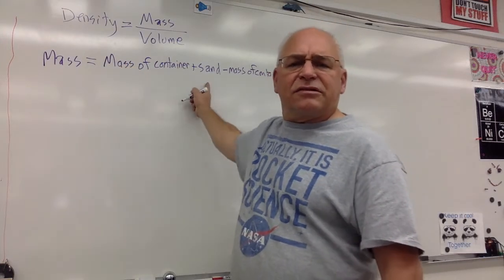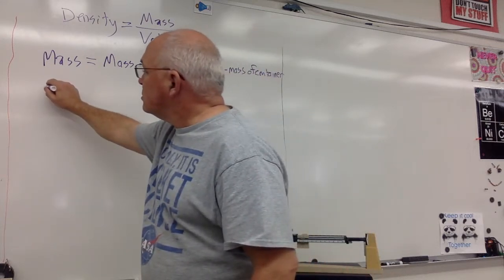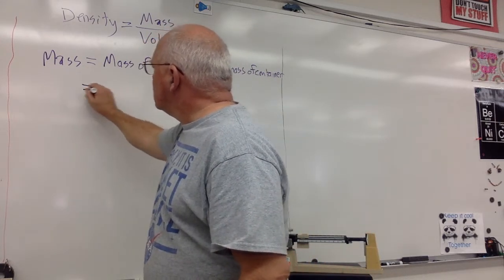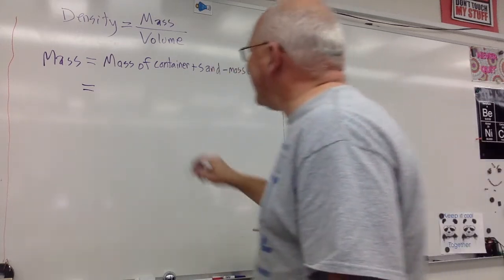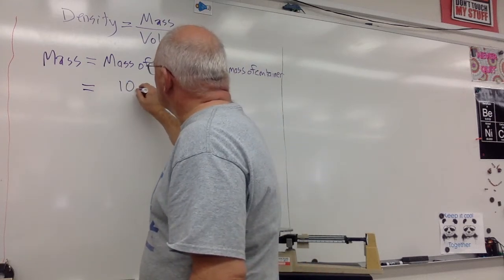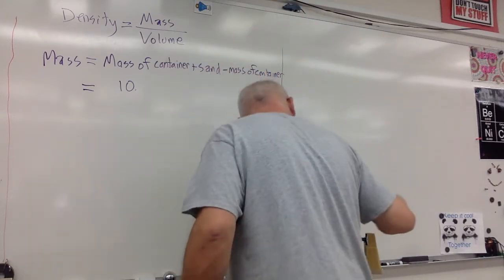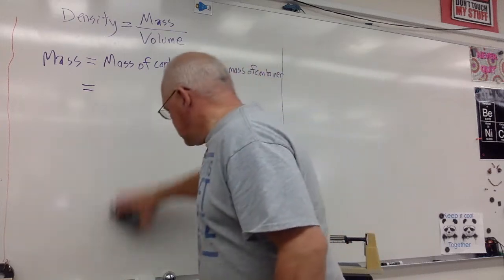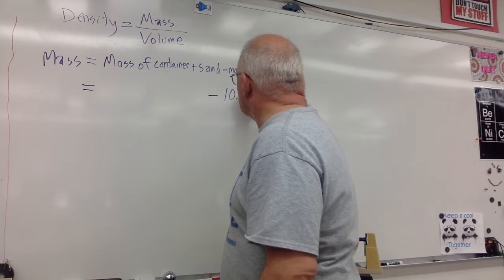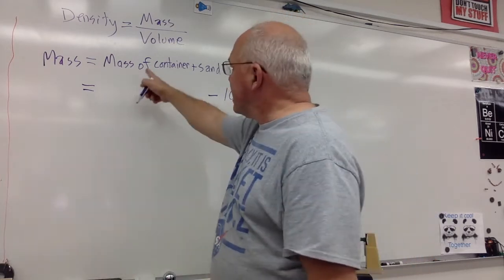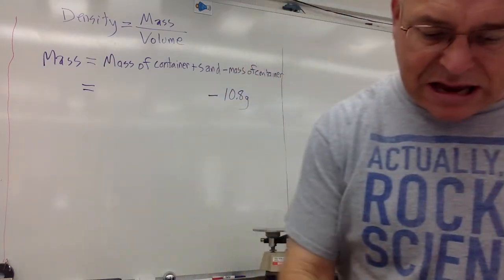So the mass of the container plus the sand minus the mass of the container. So that's equal to the mass of the container, which I just said was 10.8. The mass of the container is 10.8 grams. I'm going to put down the mass of the container plus the sand in here and then subtract. So let's add the sand in.